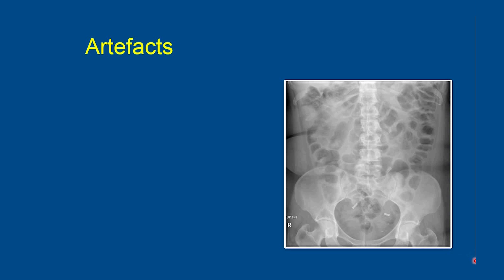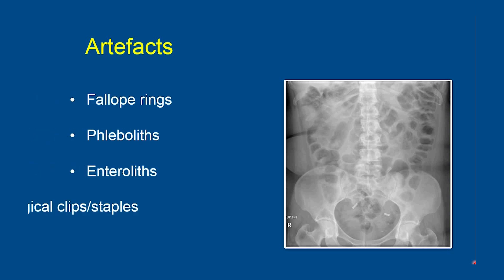We may also come across some artifacts in a plain KUB film. A few of these artifacts are fallopian rings, phleboliths, enteroliths, and surgical clips or staples. As you can see in this example, these are the fallopian rings which may appear radio-dense, and these are the phleboliths — these can be mistaken for calculi, so be mindful of these artifacts.